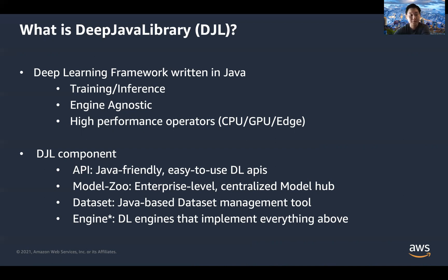Deep Java Library consists of several key components. First is the API, which is the core of the library itself. Users can write very simple code and achieve high-level deep learning use cases. It's been designed to be Java-friendly and easy to use, so users can write inference code in as few as 10 lines, and most training code including building neural networks in around 30 lines of code.